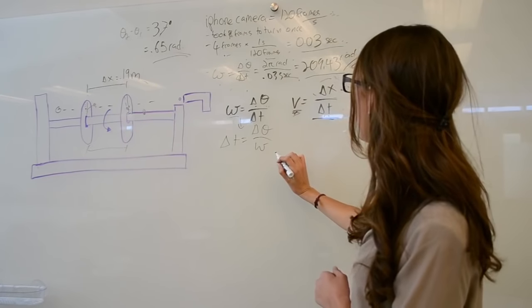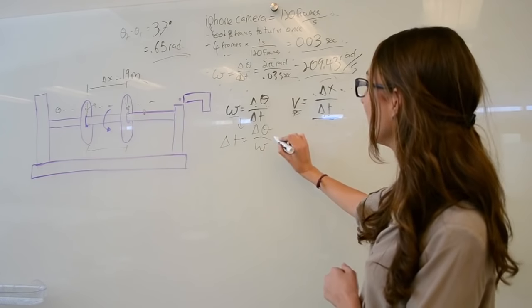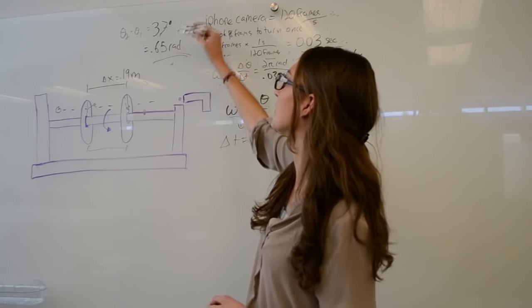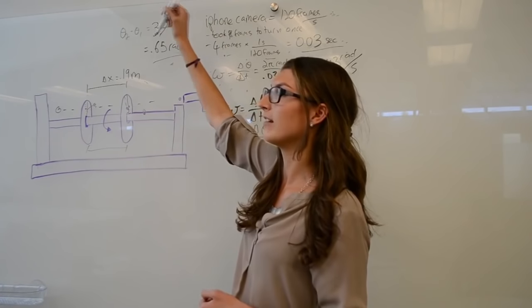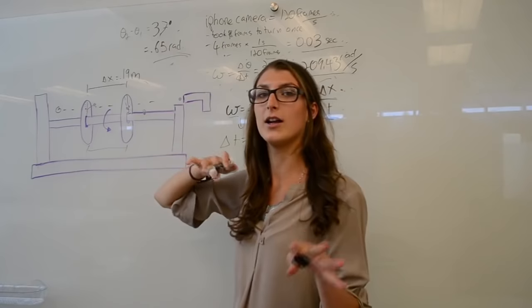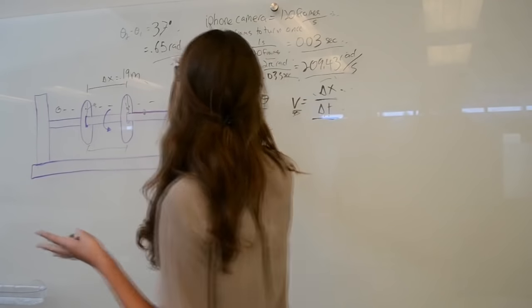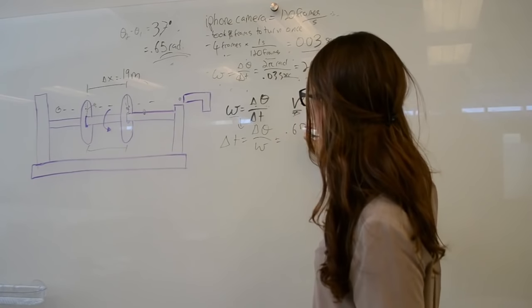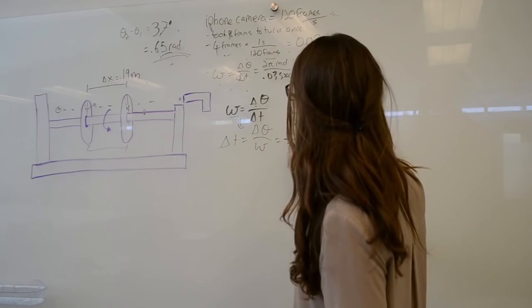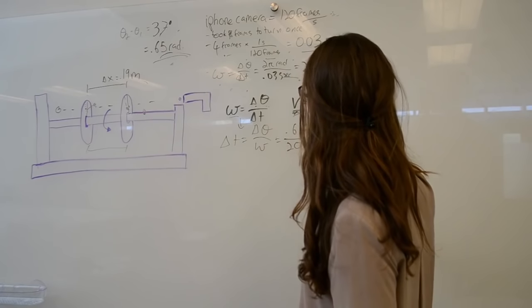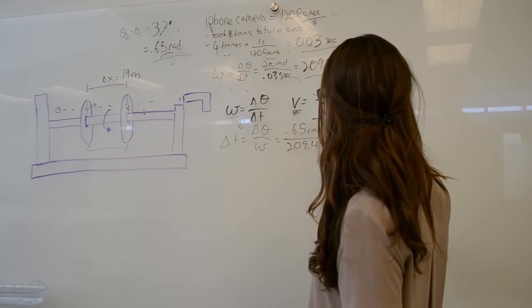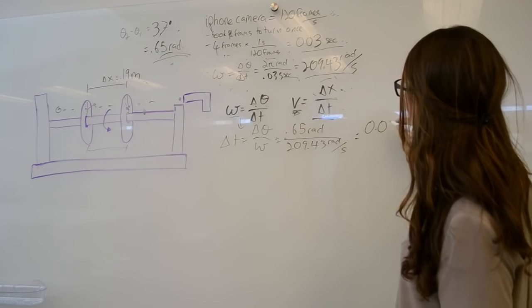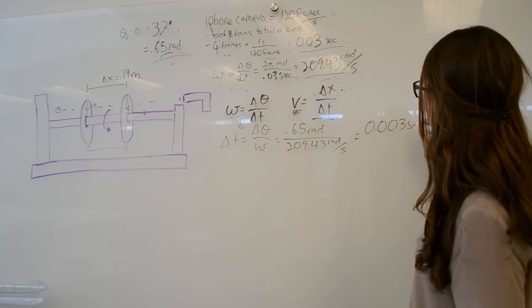Once we have omega and we have the change in theta, which is 37 degrees, we put that into radians because we know that one radian is equal to about 57 degrees. We converted that to radians, so we know that this is equal to 0.65 radians divided by 209.43 radians per second. This turns out to be about 0.003 seconds.